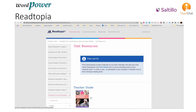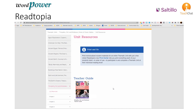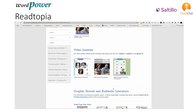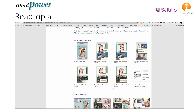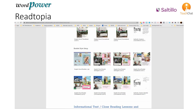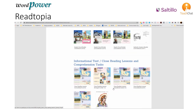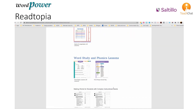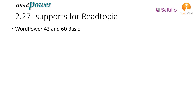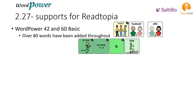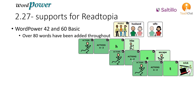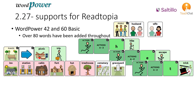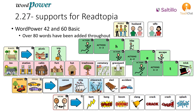The trial offers a video tour of the curriculum and you can explore entire units. These thematic units offer a variety of materials — download a sample for yourself. Over 80 words have been added to the WordPower 42 and 60 BASIC files to support use of the Retopia curriculum. Lots of fun words — this demonstrates a small sample of what has been added.